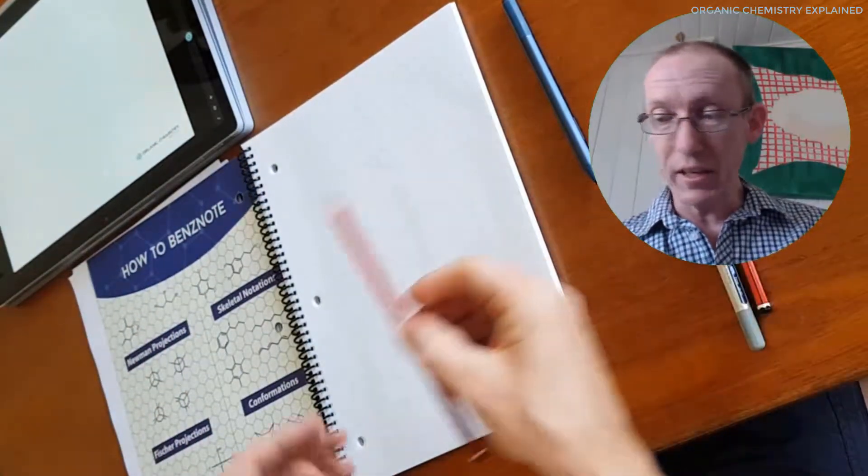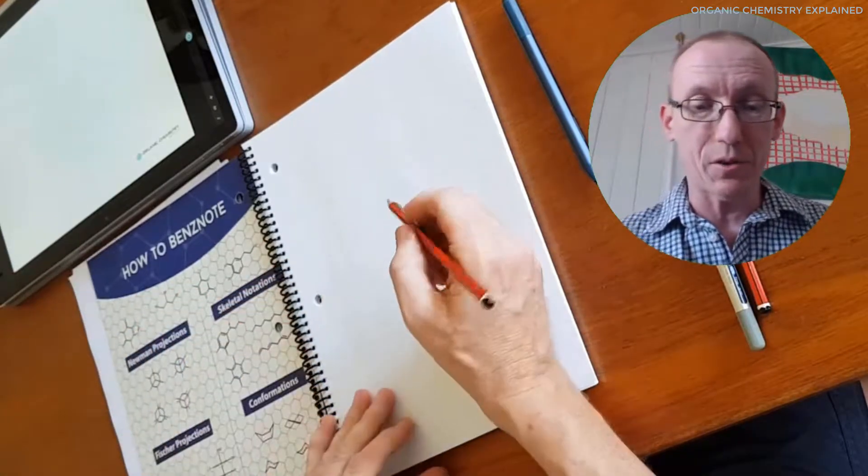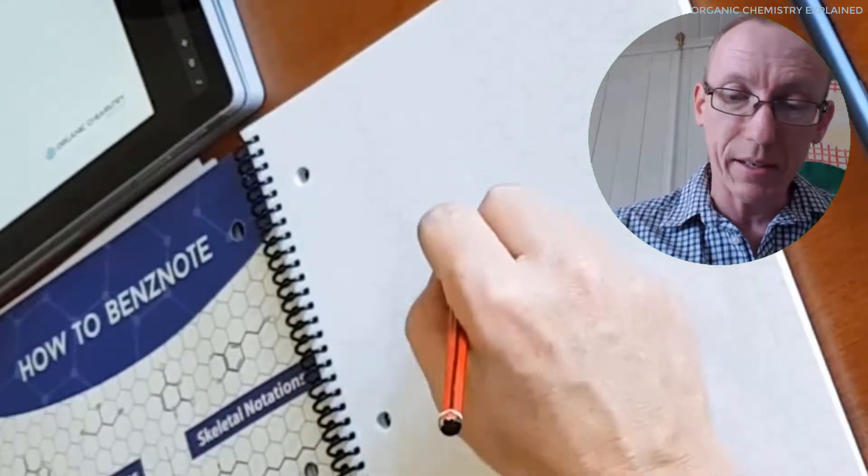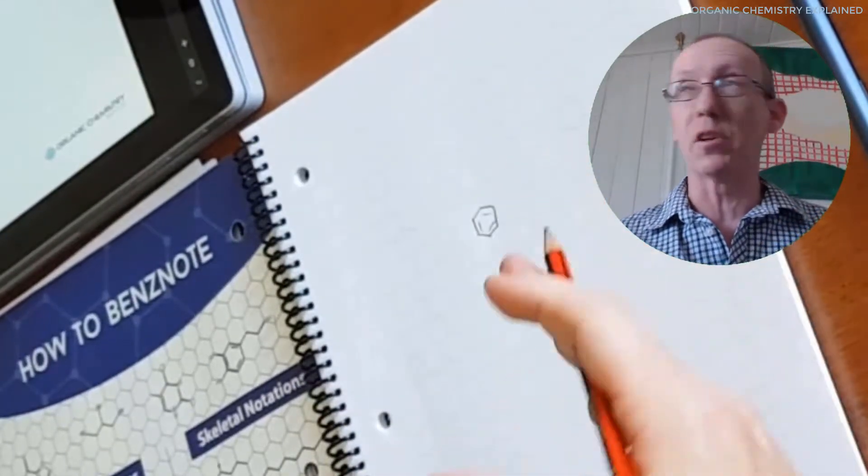Now I've got a couple of pencils here. I've got a fairly blunt 2B pencil so just draw out a structure so you can see what it looks like.